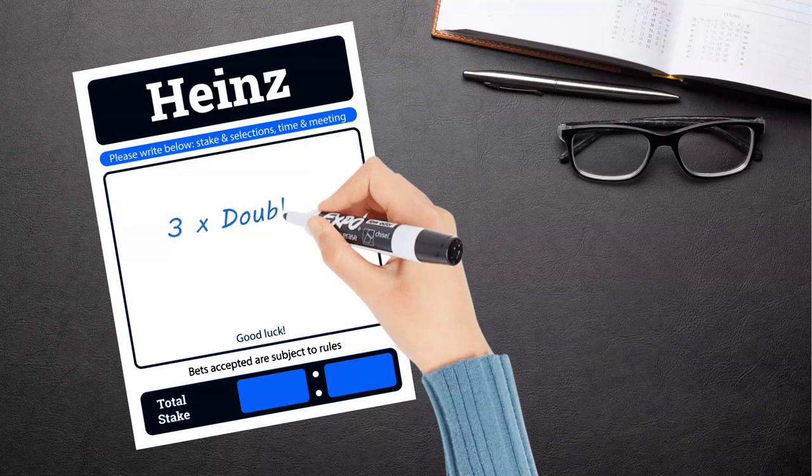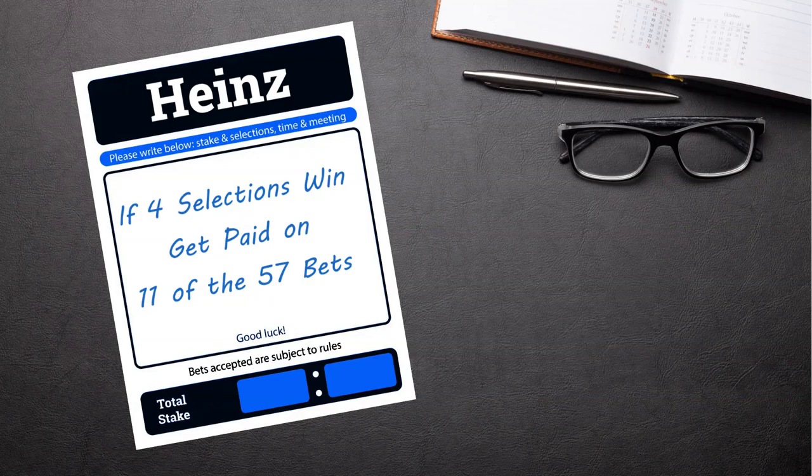If four win, you'll get paid on 11 bets, that's six doubles, four trebles and a fourfold accumulator.